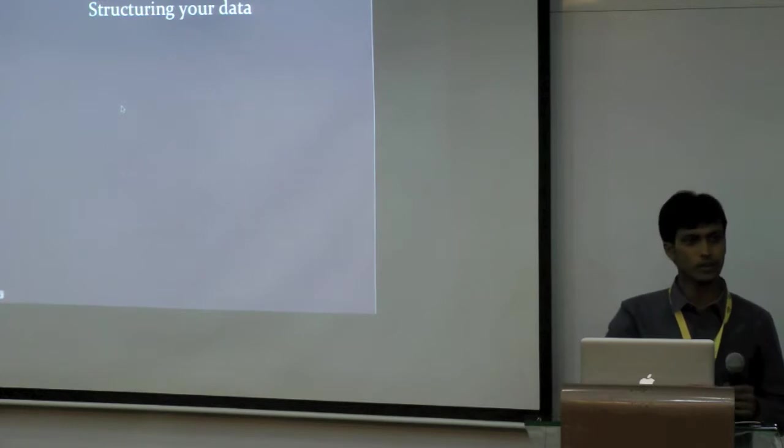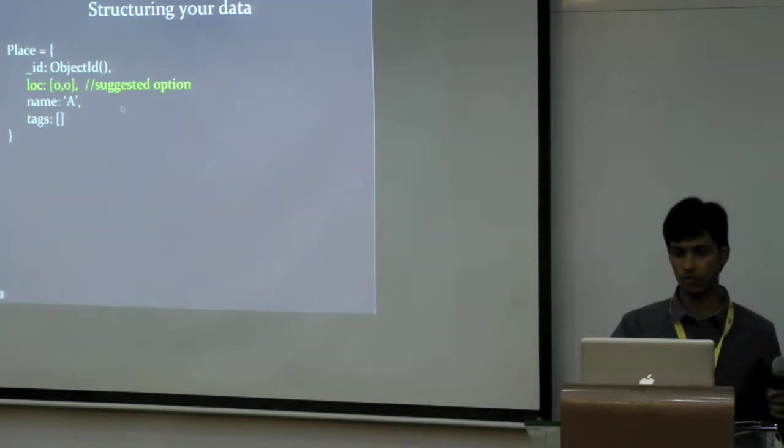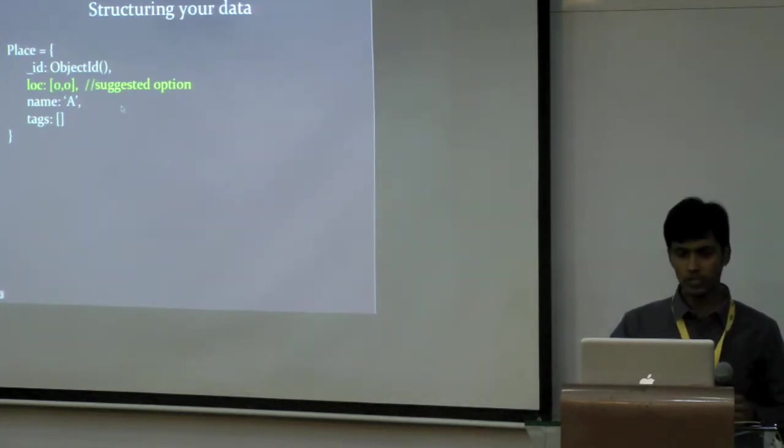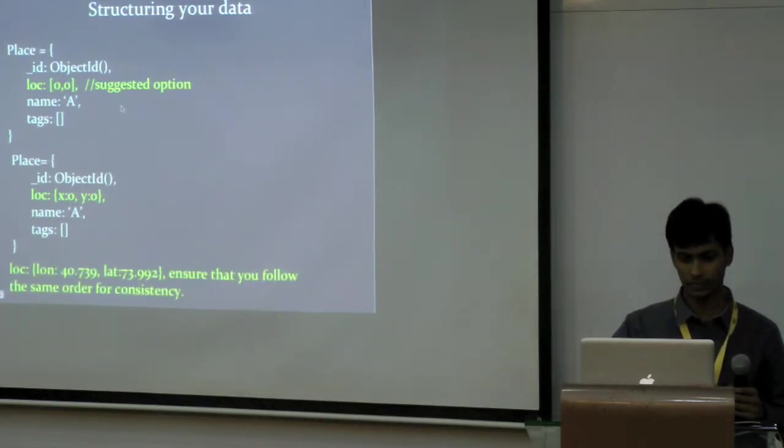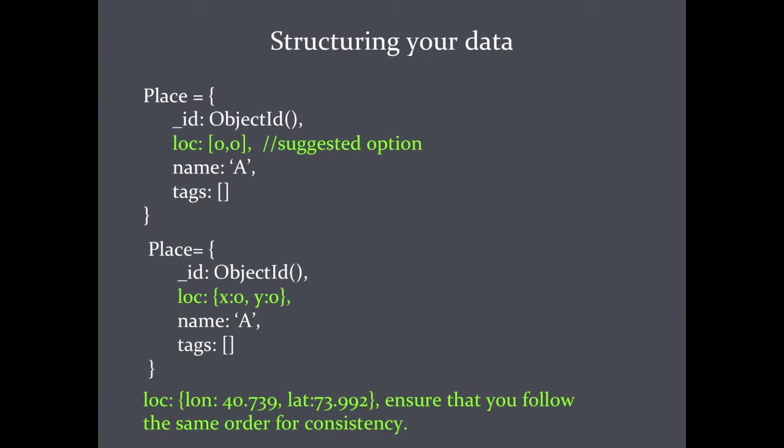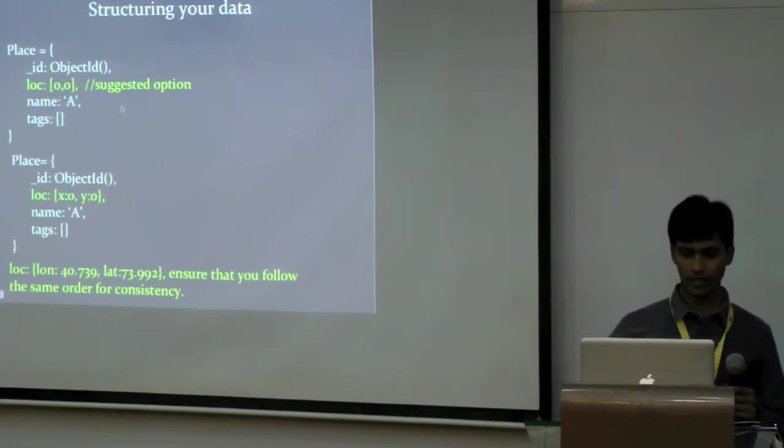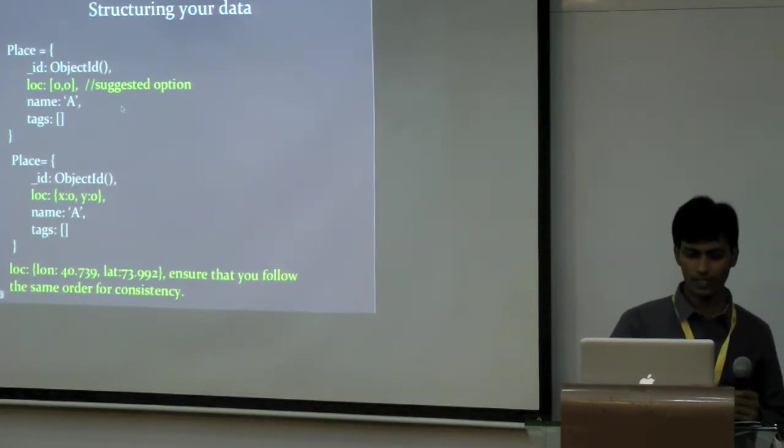So, how do you structure your data? By the way, if you have any questions, just feel free to ask me that. Let's say we assume that we basically store the data of businesses as local businesses. So, here I'll talk about local businesses. Let's say we have an object known as place, which basically has a location, which is a latitude and longitude, and name as area and tags. Tags basically just categories associated with it. You can store the location as an array, like mentioned here. You can store the location as an object, like x and y coordinates, or you can even mention any other keys, longitude or latitude. But you need to make sure that you always follow the same convention of ordering, so that you either follow lat long or you follow long lat, but don't mix up. You need to ensure that you follow the same order for consistency.